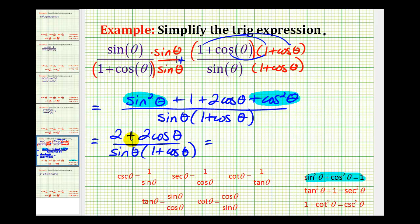Notice how the numerator has a common factor of two. If we factor the two out, we're left with one plus cosine theta, all over sine theta, one plus cosine theta.